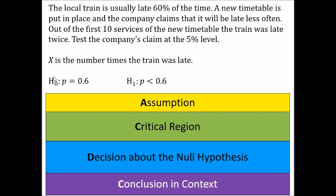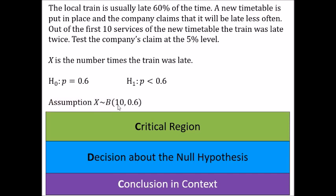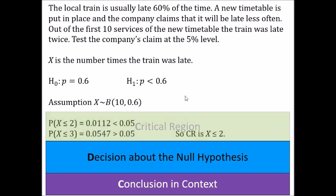Assuming the null hypothesis is true, the distribution is binomial with 10 trials and p equals 0.6. Using the calculator to find the critical region: the probability that x is less than or equal to 2 is 0.0112, just under 5%; x less than or equal to 3 gives 0.0547, just over 5%. So the critical region is x less than or equal to 2.